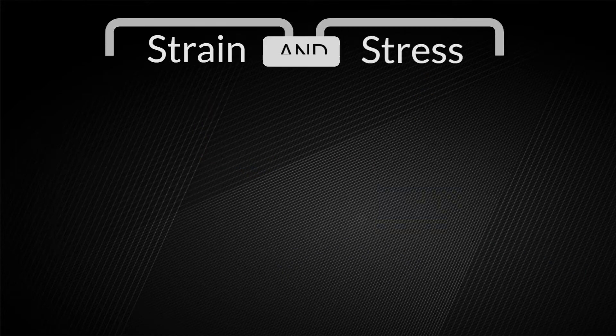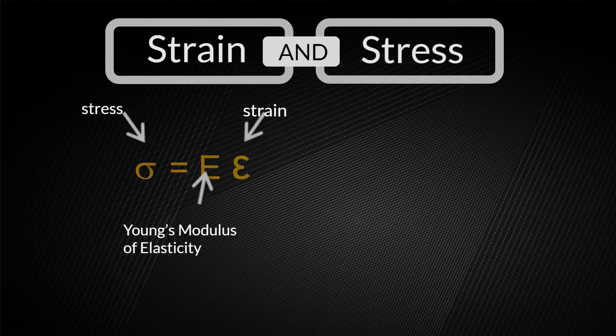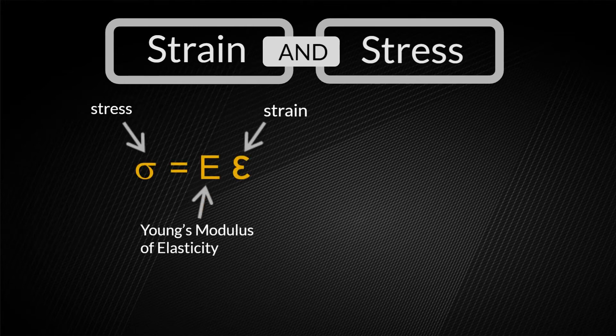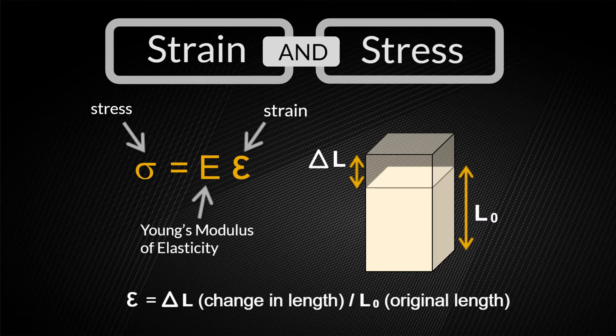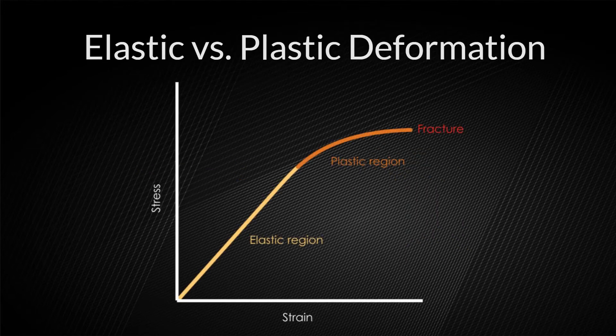How are stress and strain linked? Strain is a measure of how much a material has stretched or deformed, and it is often easier to measure than stress. Strain is equal to the change in length over the original length. A material subjected to stress will deform elastically until it reaches its yield point, meaning it will revert back to its original shape when it is no longer under applied stress. However, when the yield point has been surpassed, deformation becomes permanent.